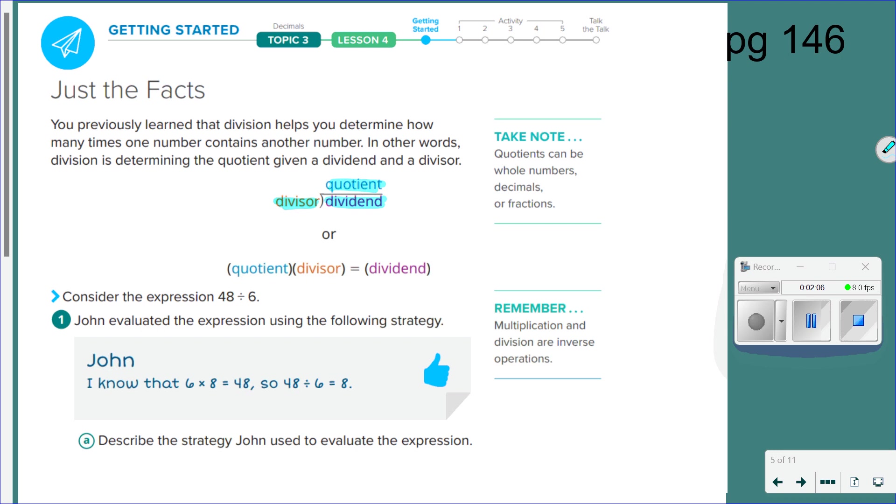Now, if I'm looking at it as a multiplication problem, we can actually use division terms in multiplication, and that's going to be the quotient times the divisor equals my dividend.